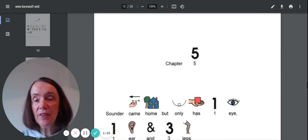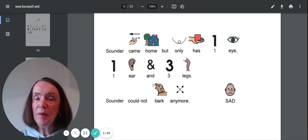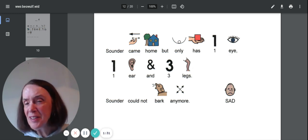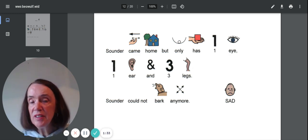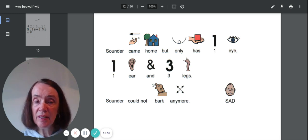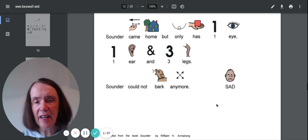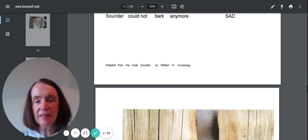This is chapter five. Sounder came home, but only has one eye, one ear and three legs. Oh, he's hurt. Sounder could not bark anymore. Oh, we're all very sad. It's a picture of being sad.